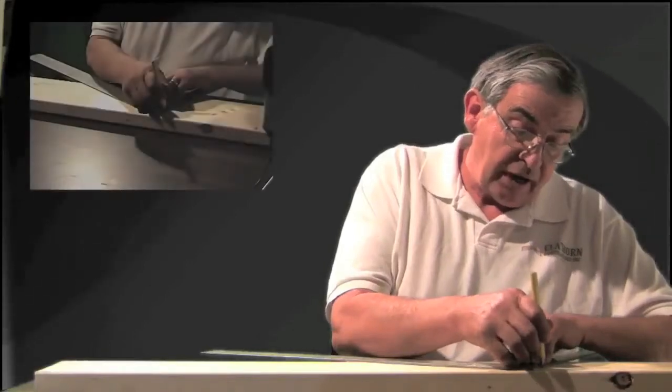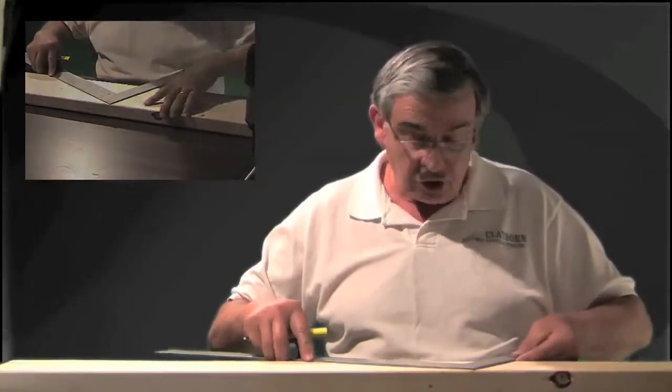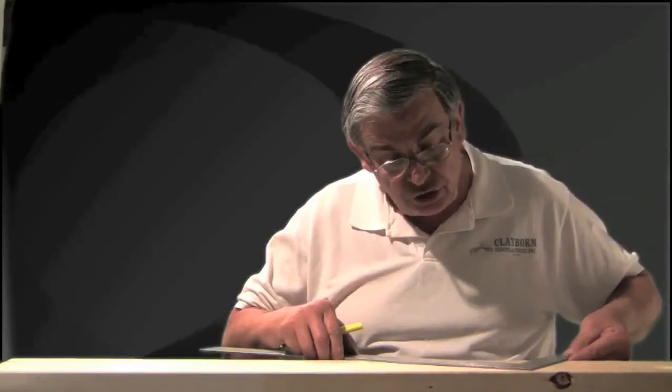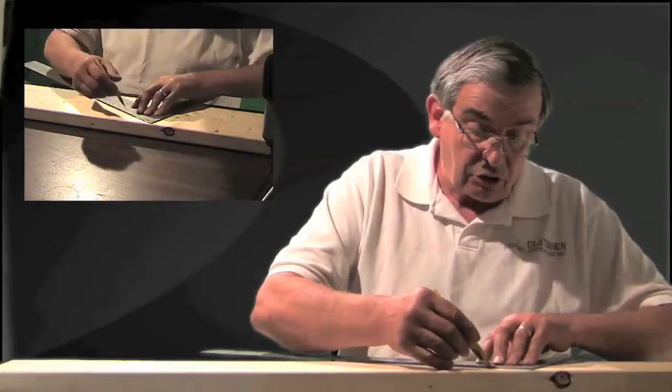The rest of the rafters have an inch and a half bird's mouth. We want this one to have an inch and a half also. Then I'm going to slide the framing square right back to the top edge of my pencil mark, which is an inch and a half deep, and I'm going to scribe a line across. This is typically called a bird's mouth.